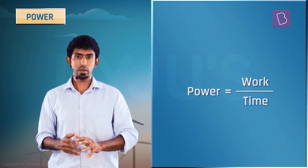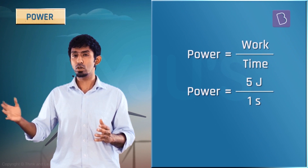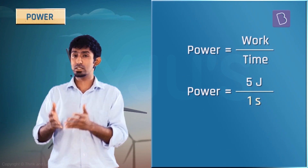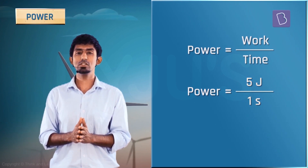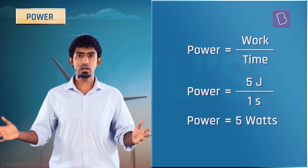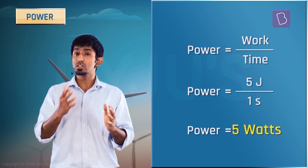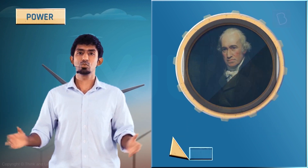If you have a power of say 5 watts — let's define the unit — it means that for every second, 5 joules of energy or 5 joules of work is being done. This unit is called the watt, named after James Watt.